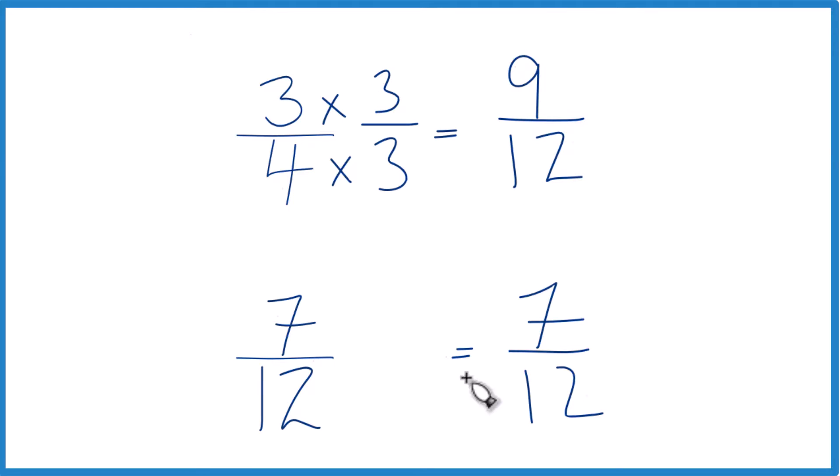But now, since we have the same denominator, we can compare the numerators. 9 is greater than 7, so 9 twelfths, that's greater than 7 twelfths.